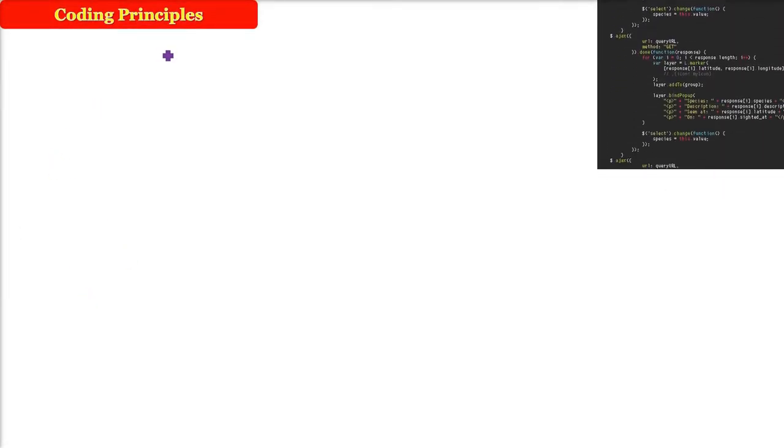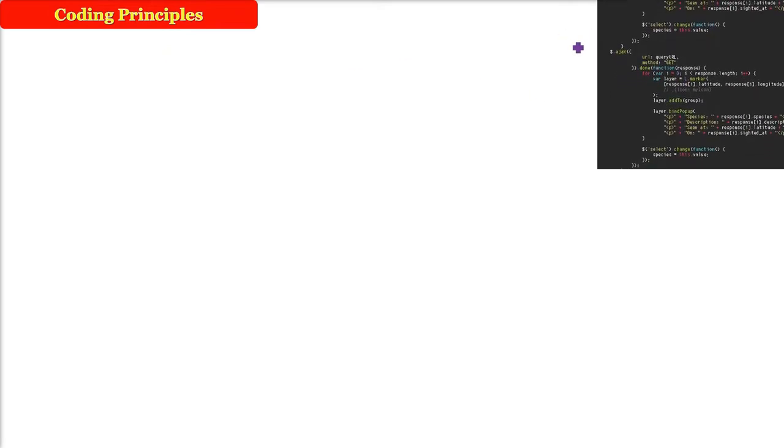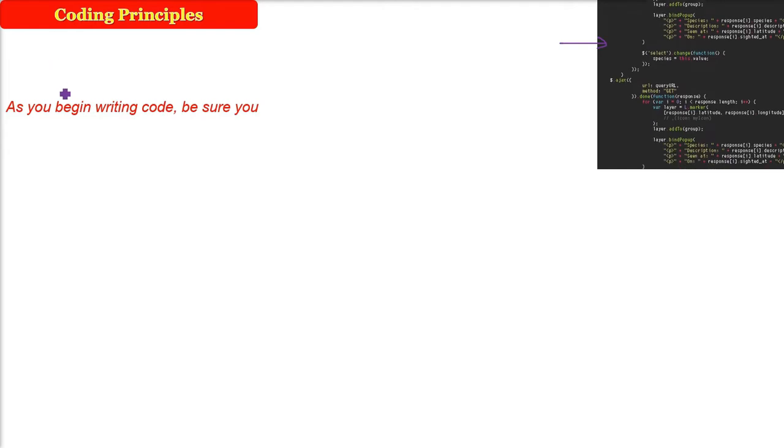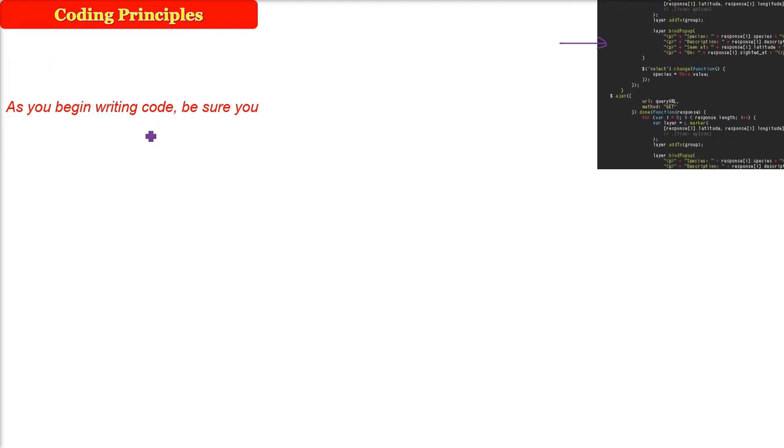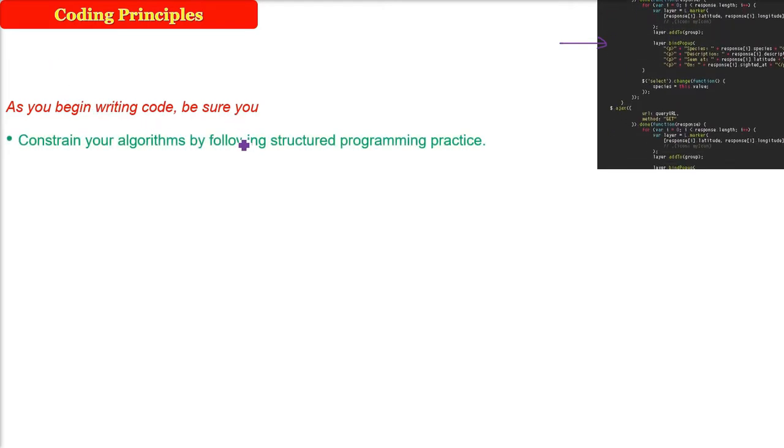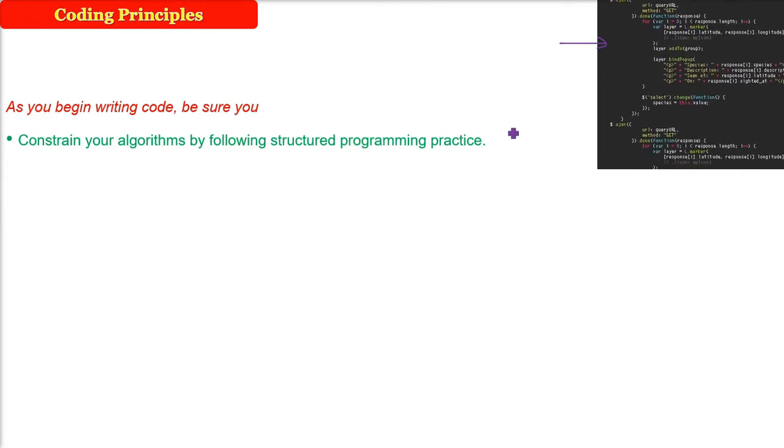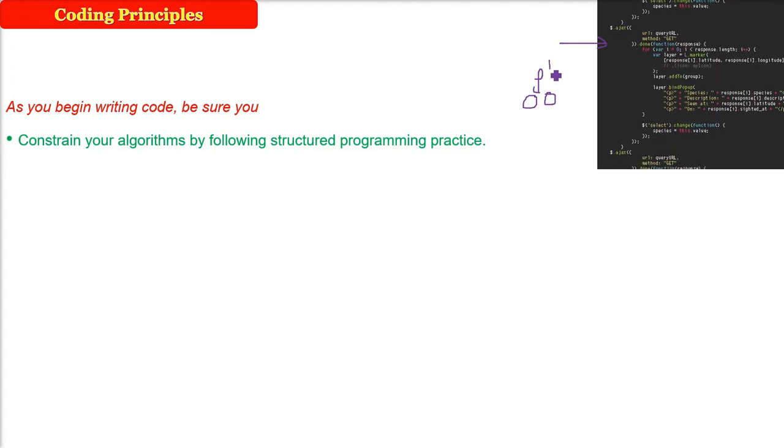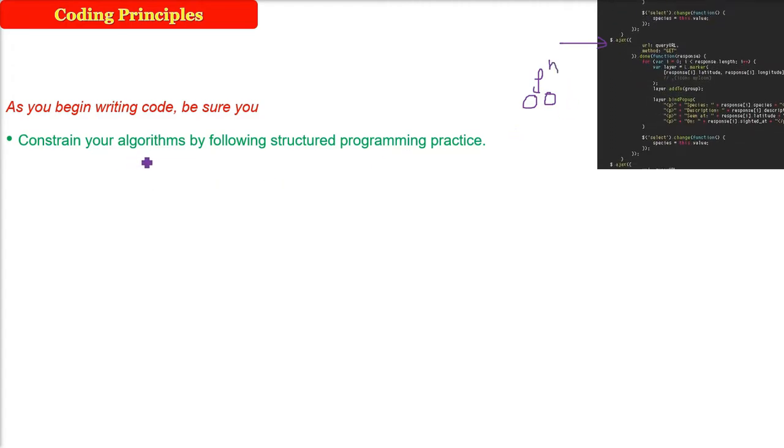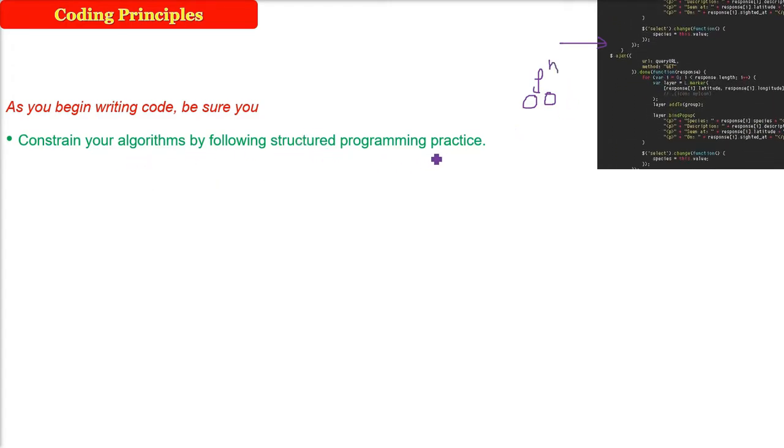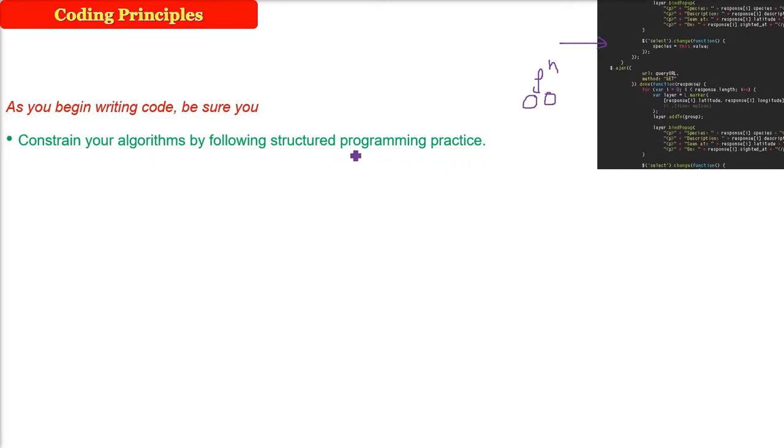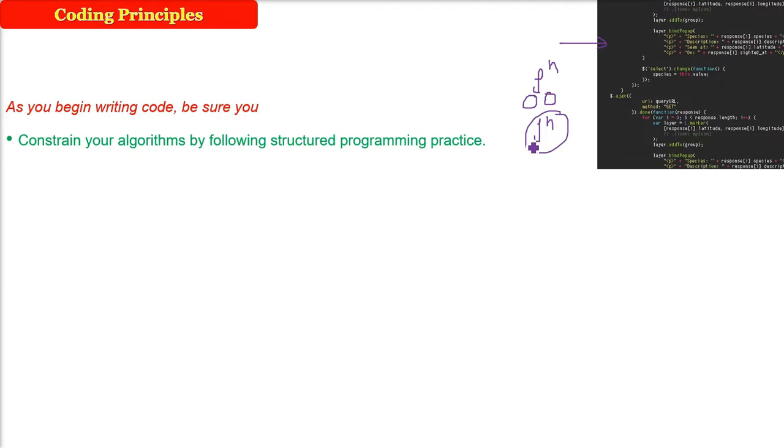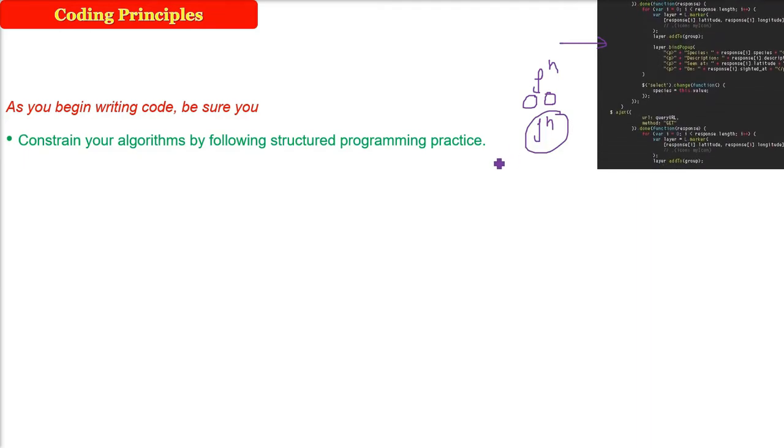Coding principles. A practitioner, coder, or programmer—what principles do they have to follow? As we begin writing actual code, we have to follow certain practices like structured programming practice. There are many types of programming paradigms or practices. But constrain your algorithm, because before coding you have to write the algorithm. Make modularization, make functions.